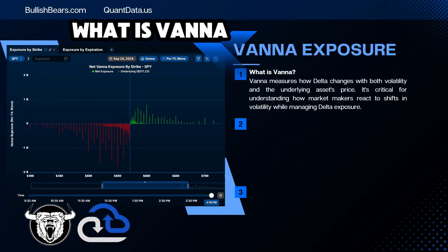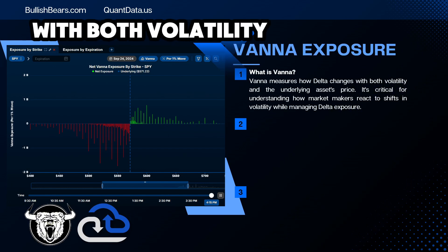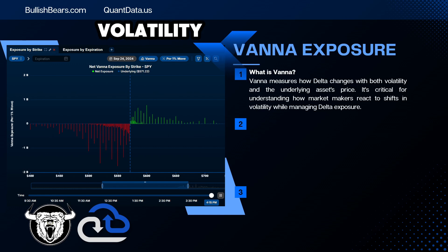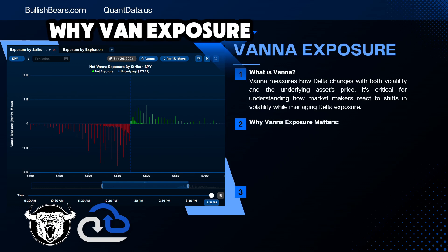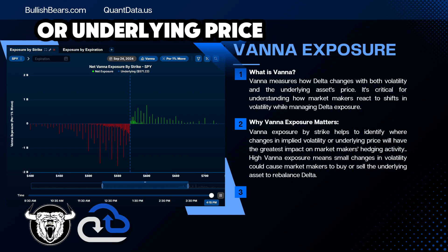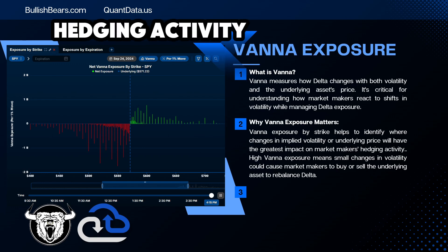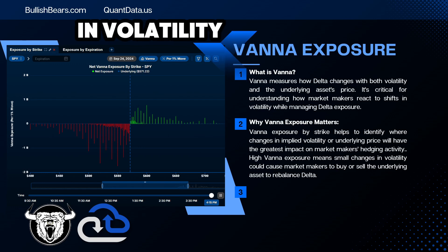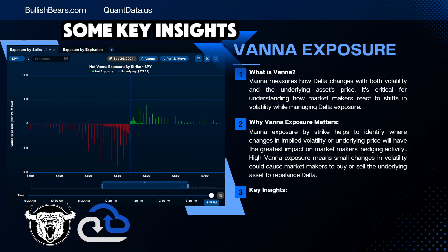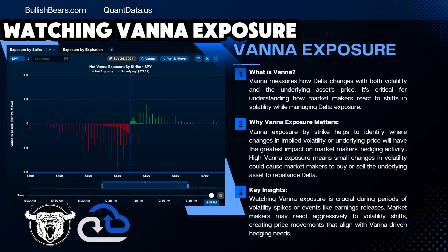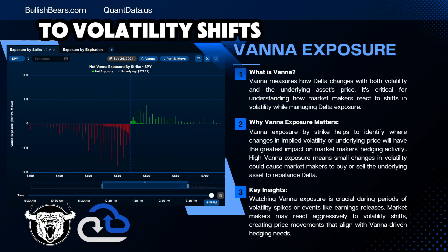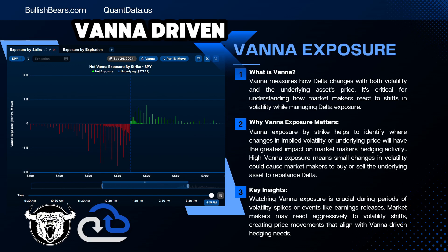Vanna exposure — what is Vanna? Vanna measures how delta changes with both volatility and the underlying asset's price. It's critical for understanding how market makers react to shifts in volatility while managing delta exposure. Vanna exposure by strike helps identify where changes in implied volatility or underlying price will have the greatest impact on market makers' hedging activity. High Vanna exposure means small changes in volatility could cause market makers to buy or sell the underlying assets to rebalance delta. Watching Vanna exposure is crucial during periods of volatility spikes or events like earnings releases, as market makers may react aggressively to volatility shifts, creating price movements aligned with Vanna-driven hedging needs.